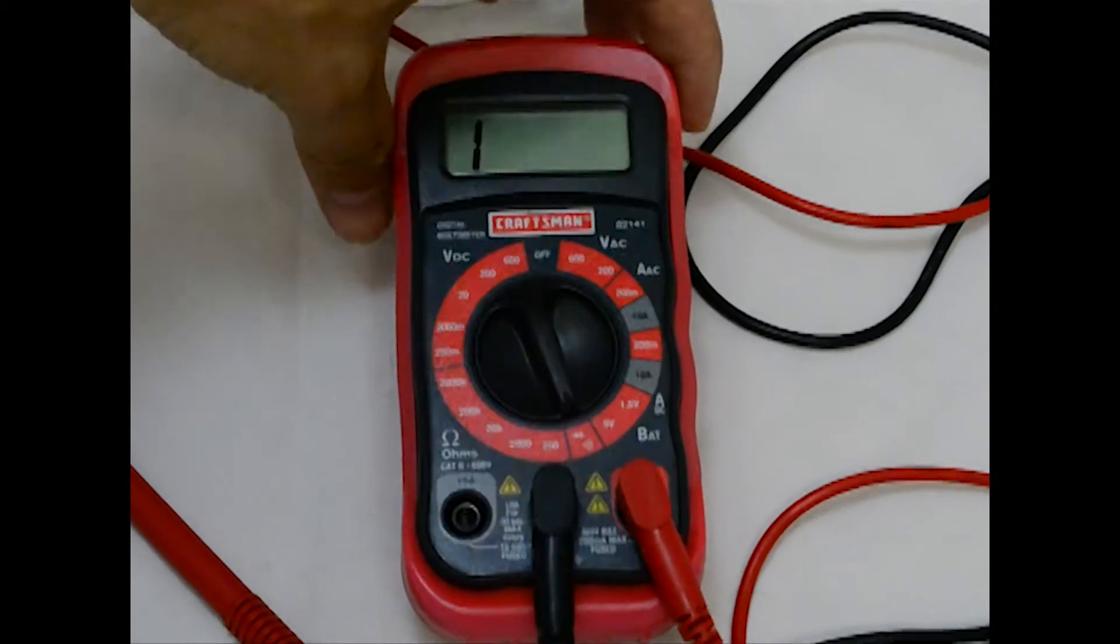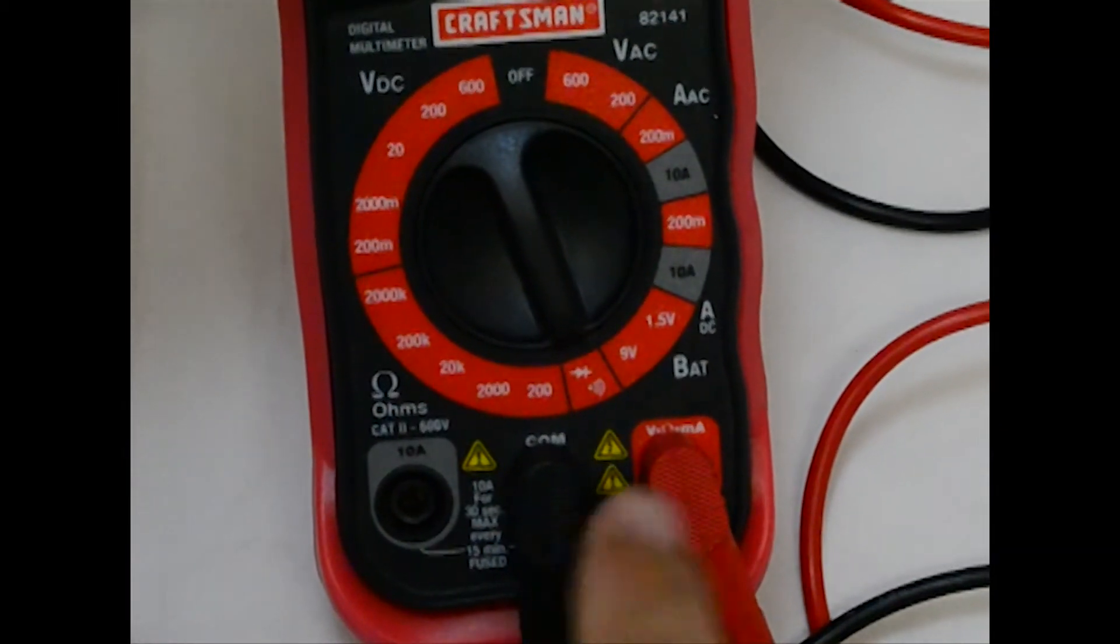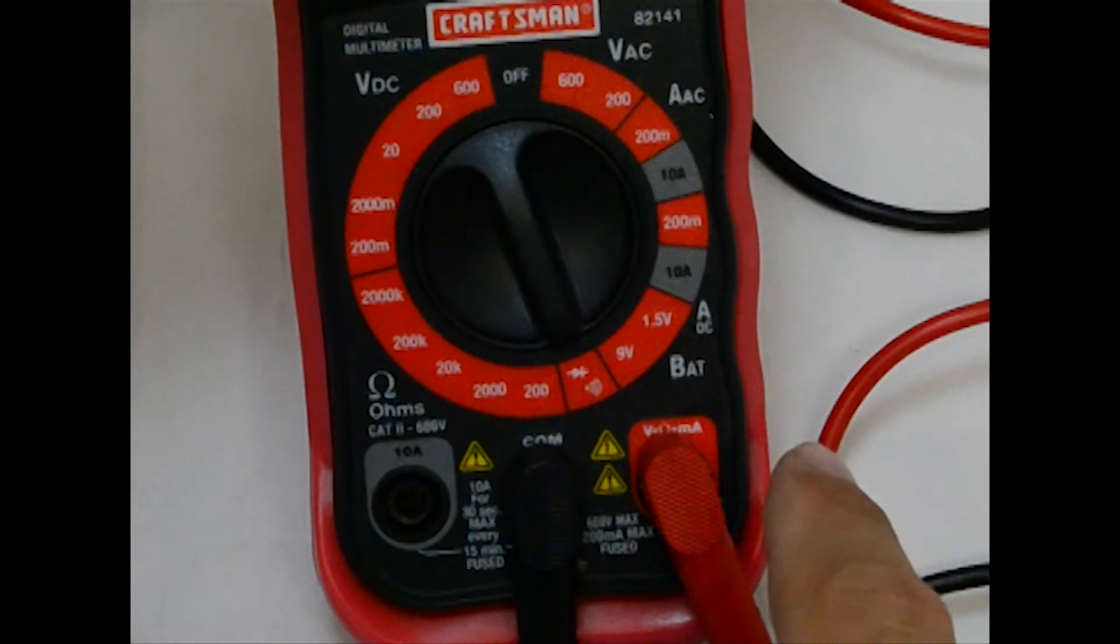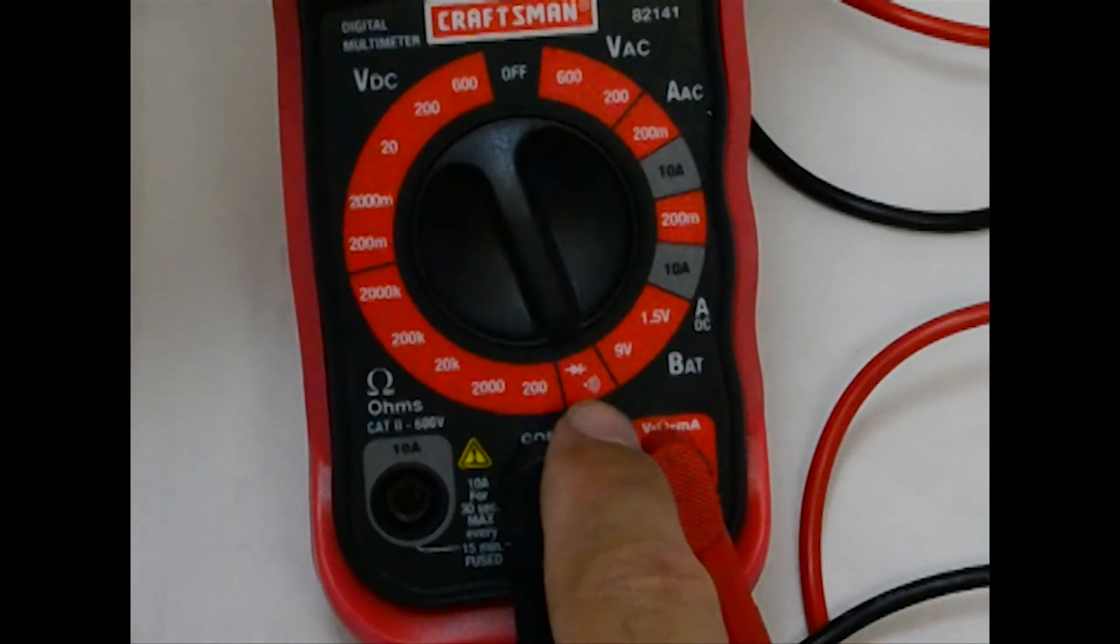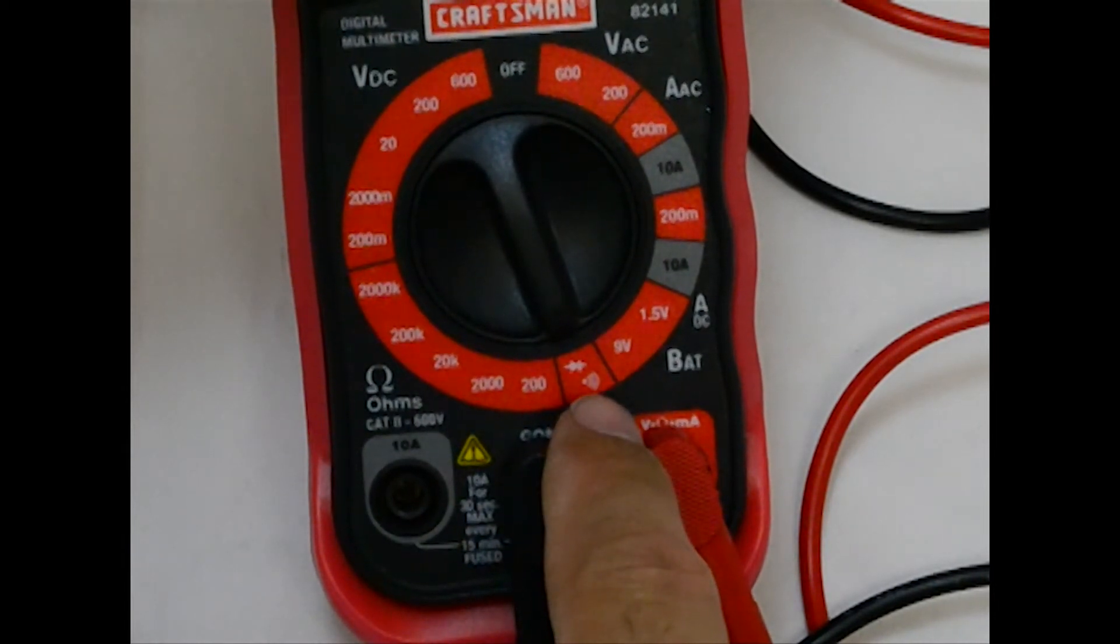This is a Craftsman meter. I have the black plugged into the COM port and the red plugged into the V, the ohms and milliamps port. I have the meter turned to this setting which looks like an arrow with a plus sign.